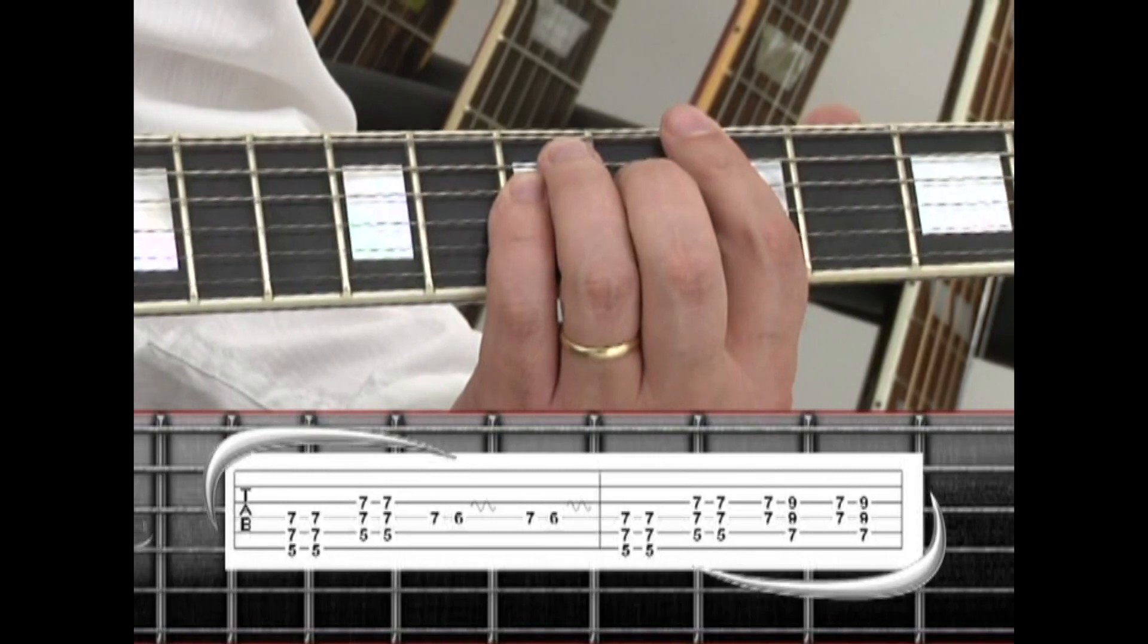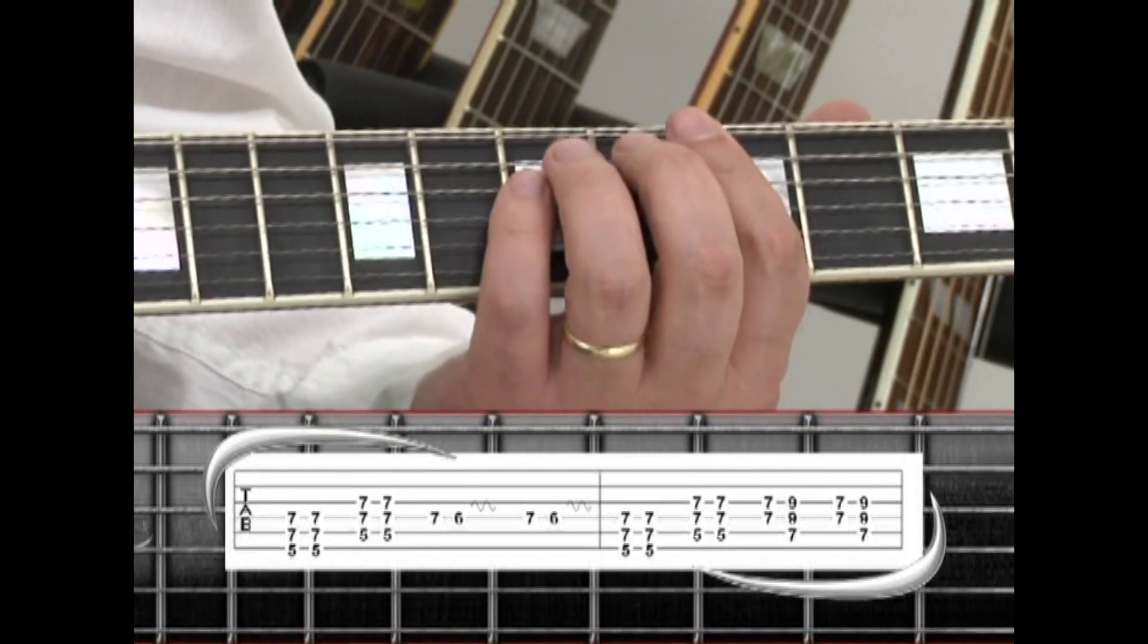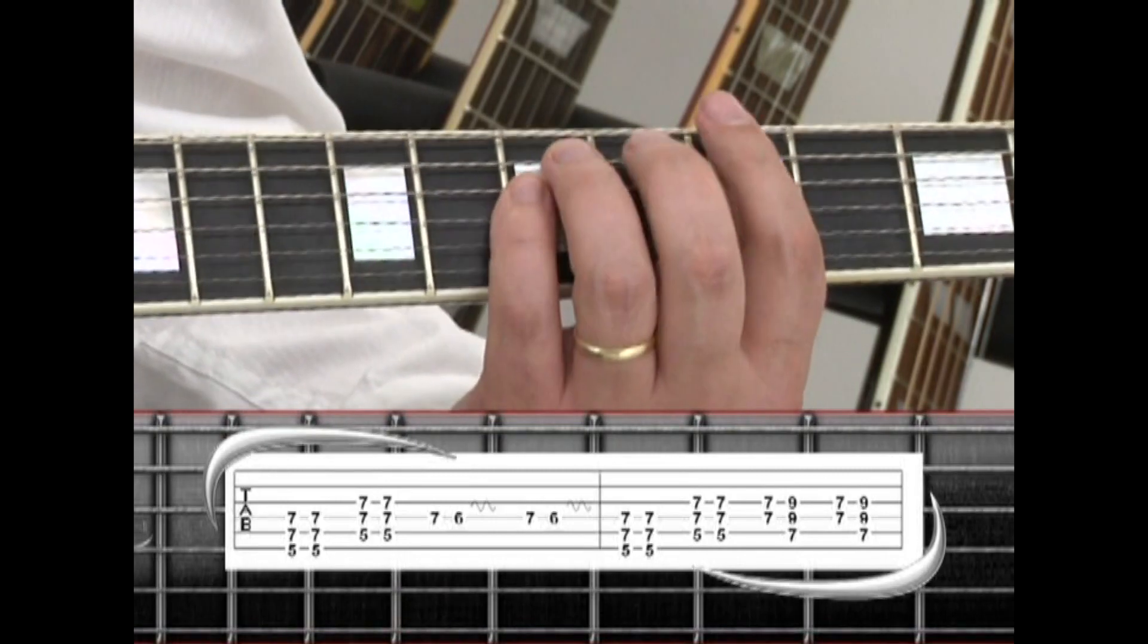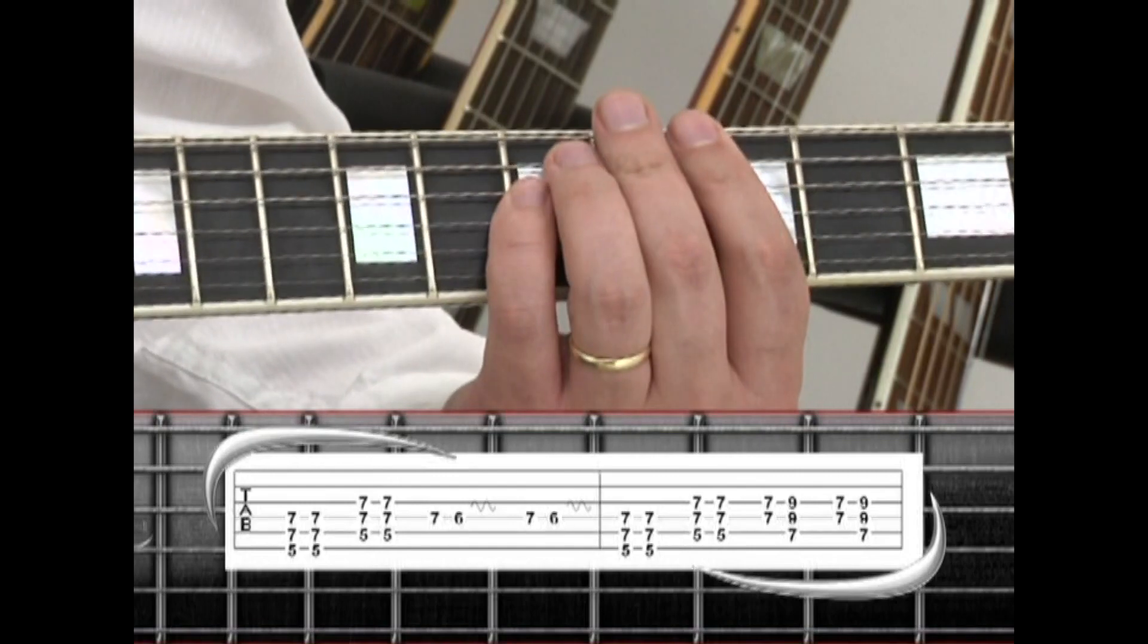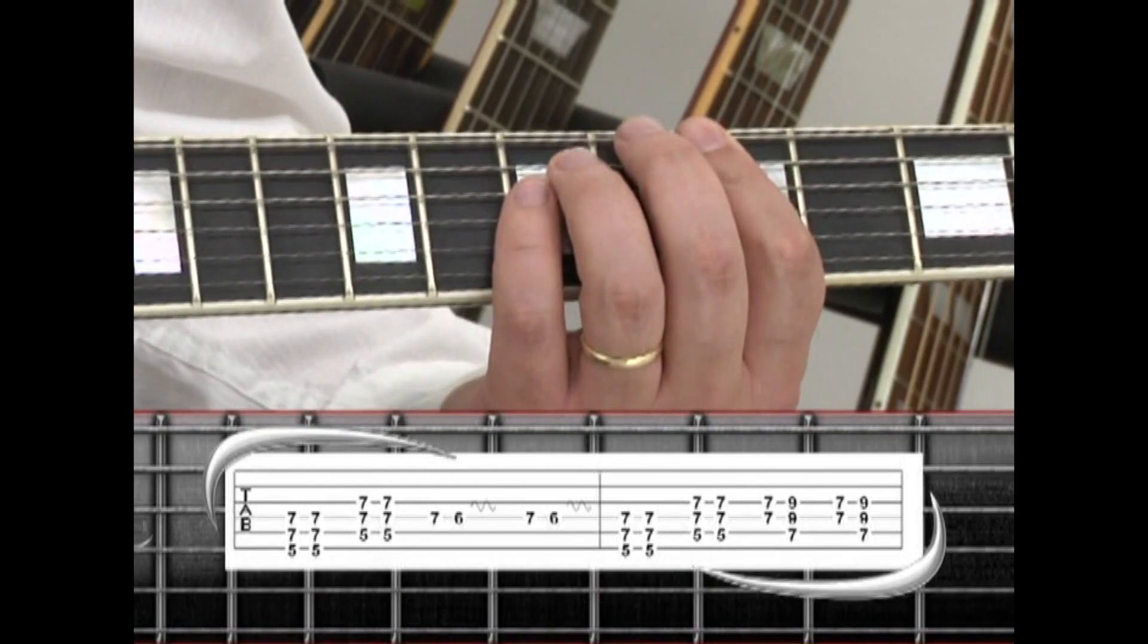The rhythm guitar is played behind this section. It uses a 6-string A5 chord that we learned earlier, frets 5, 7, 7, strum twice.